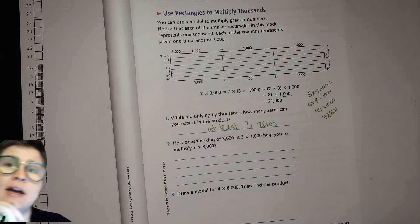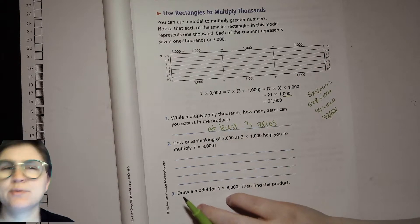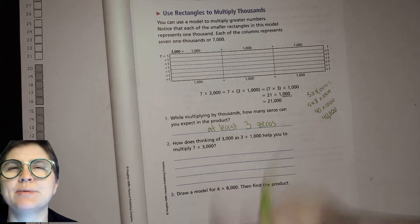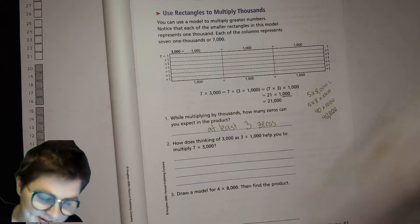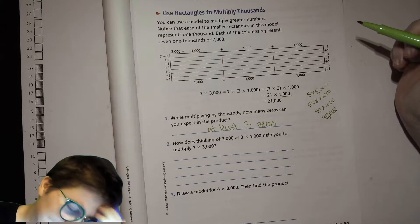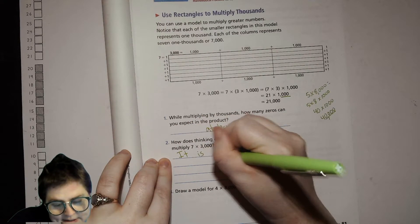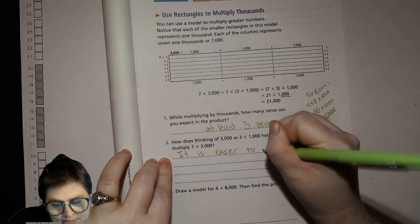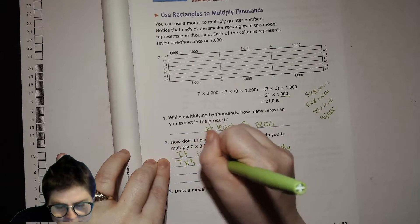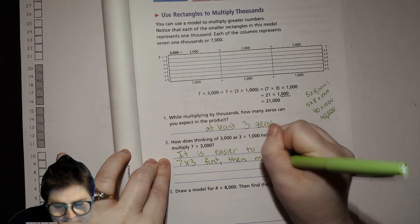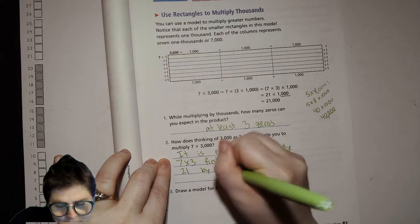Number two: how does thinking of 3,000 as 3 times 1,000 help you multiply 7 times 3,000? Write down what you think, then you can see what I wrote. Thinking of 3,000 as 3 times 1,000 helps because it is easier to multiply 7 times 3 first, then multiply 21 by 1,000.